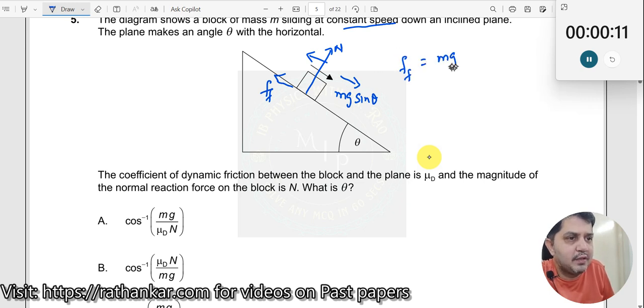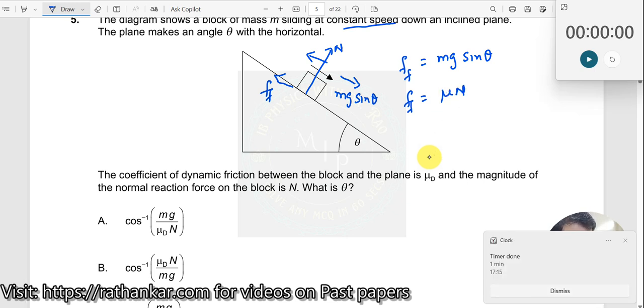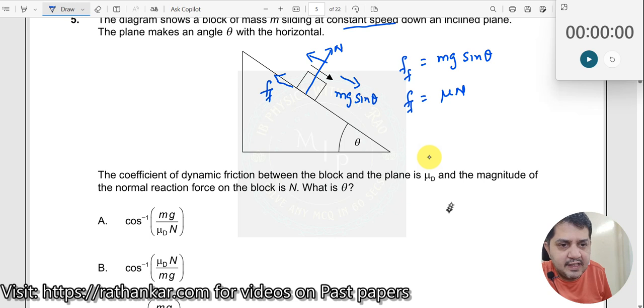Next, what you can do? You can also write frictional force is equal to μ times N, right? So μ times N, and then we can equate one with the other.